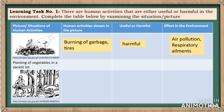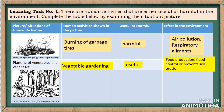For situation number two, planting of vegetables in a vacant land — the activity shown is vegetable gardening. It is useful. The effect on the environment includes food production, flood control, and prevention of soil erosion.